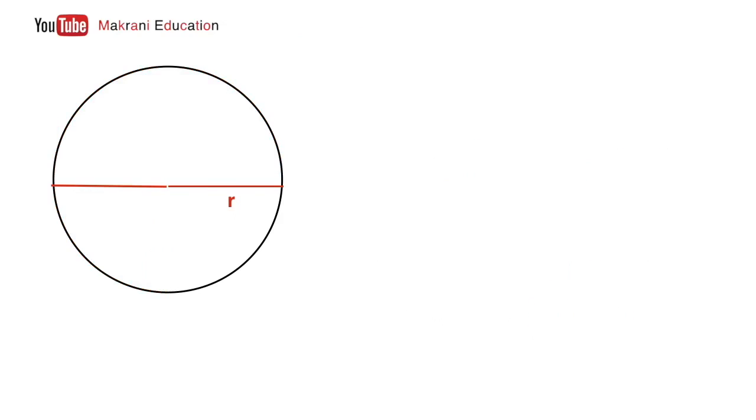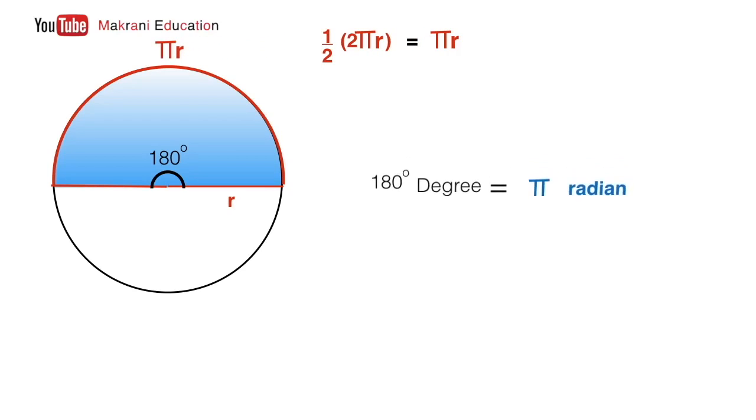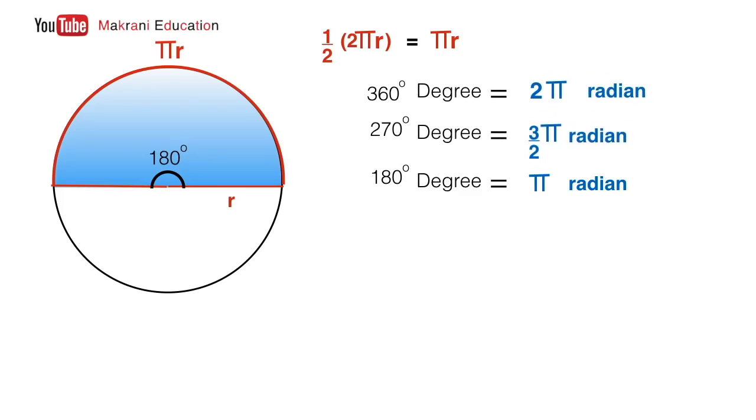Now let's reduce the circle to 180 degrees. For 180 degrees, the arc length would be half the circumference, which gives πr. Using this as arc length, 180 degrees equals π radians. Similarly, we can find that 90 degrees equals π/2 radians. So we have 360 degrees is 2π radians, 270 degrees is 3/2 π radians, and 180 degrees is π radians.